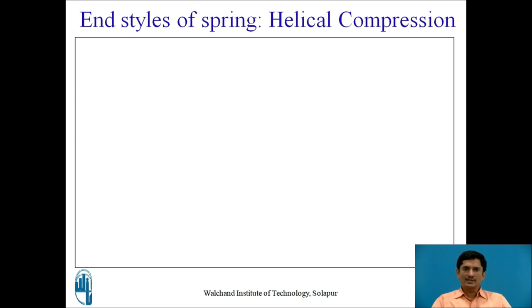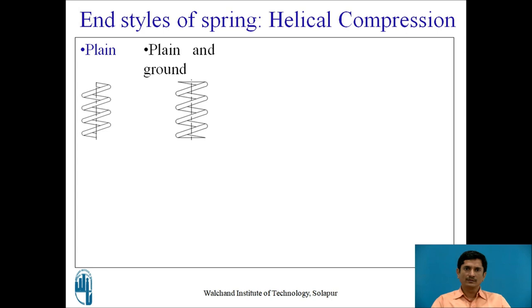Let us see what are the end styles of the spring for typical helical compression spring. The first one is the plain end, second is the plain and ground end, third is the square or squared end, and the last one is the squared and ground end.